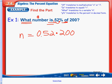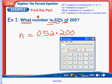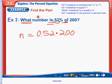So now looking at my equation here, I have n equals 52 hundredths times 200. So, typing that in, I have 0.52 times 200, and I get 104.